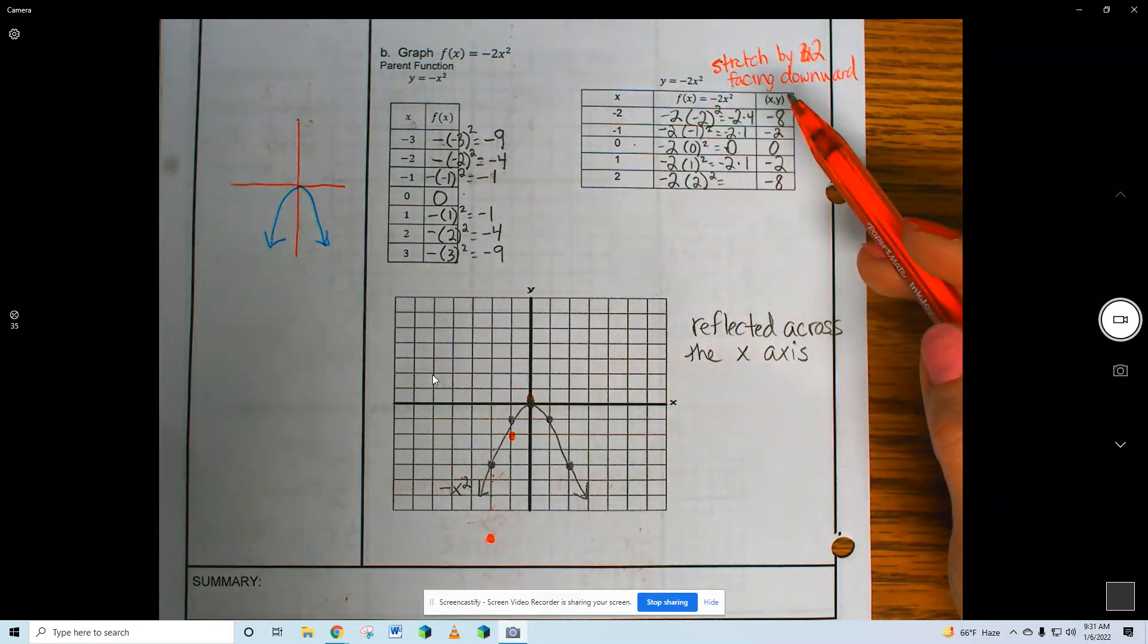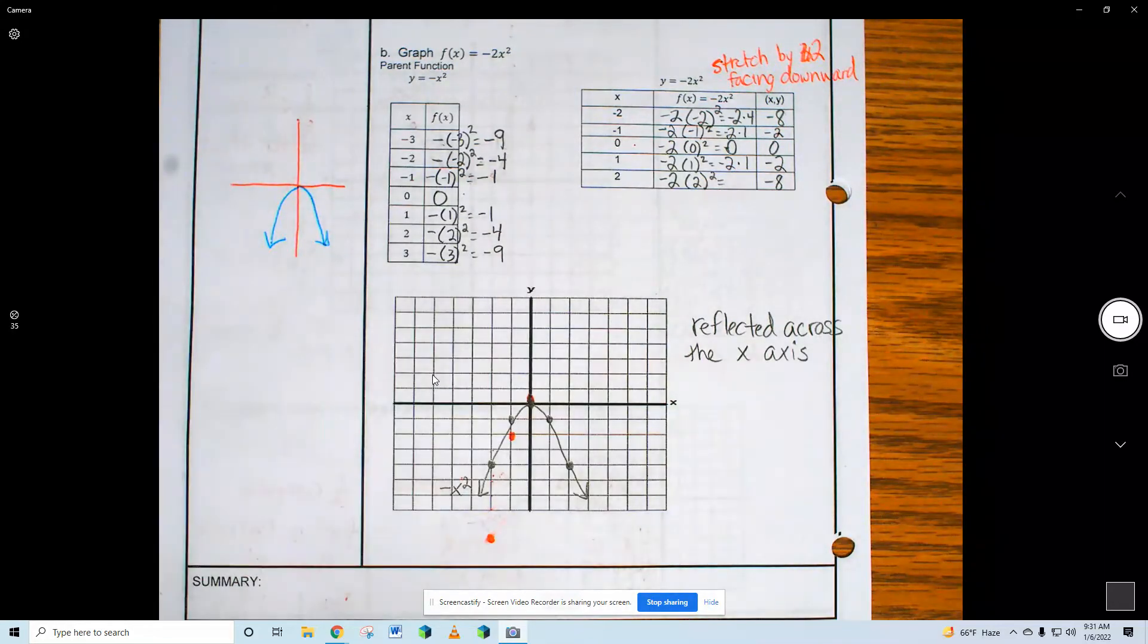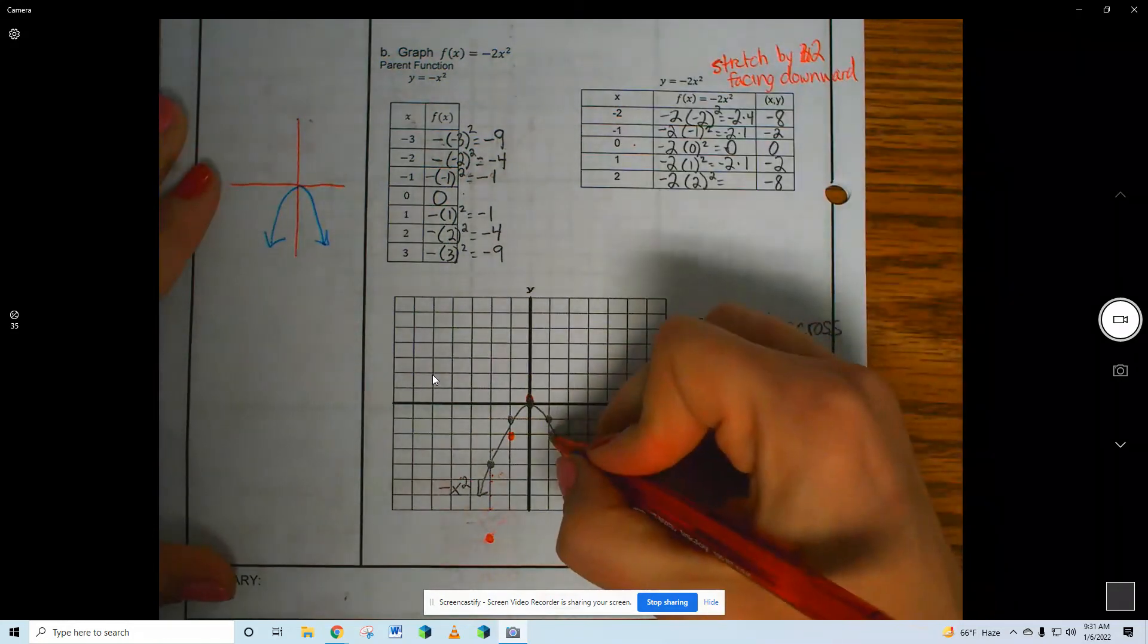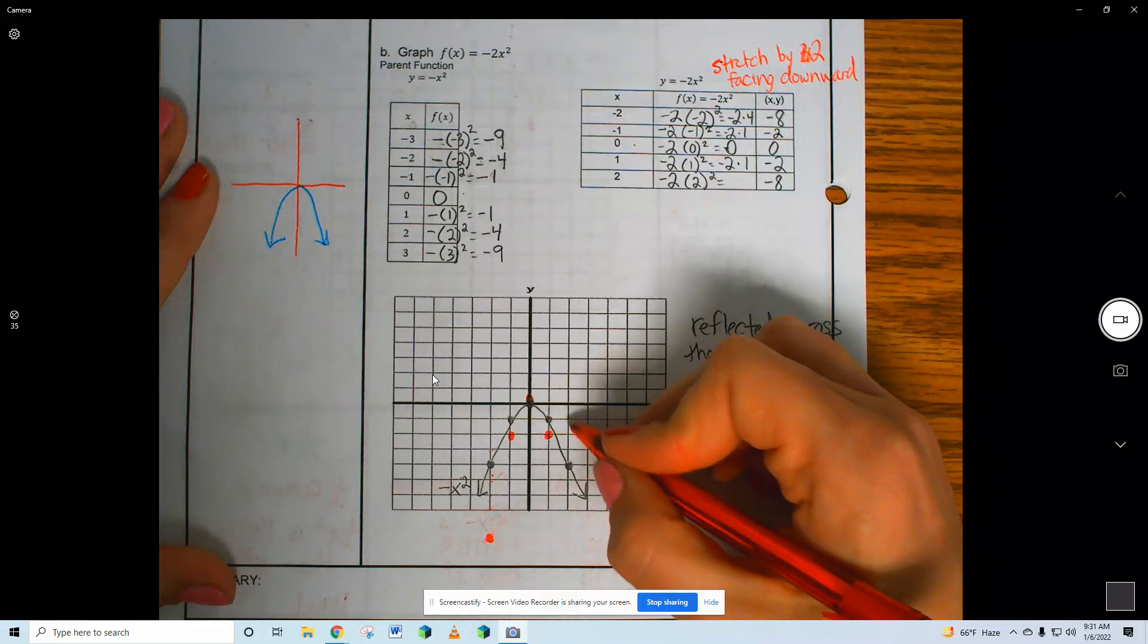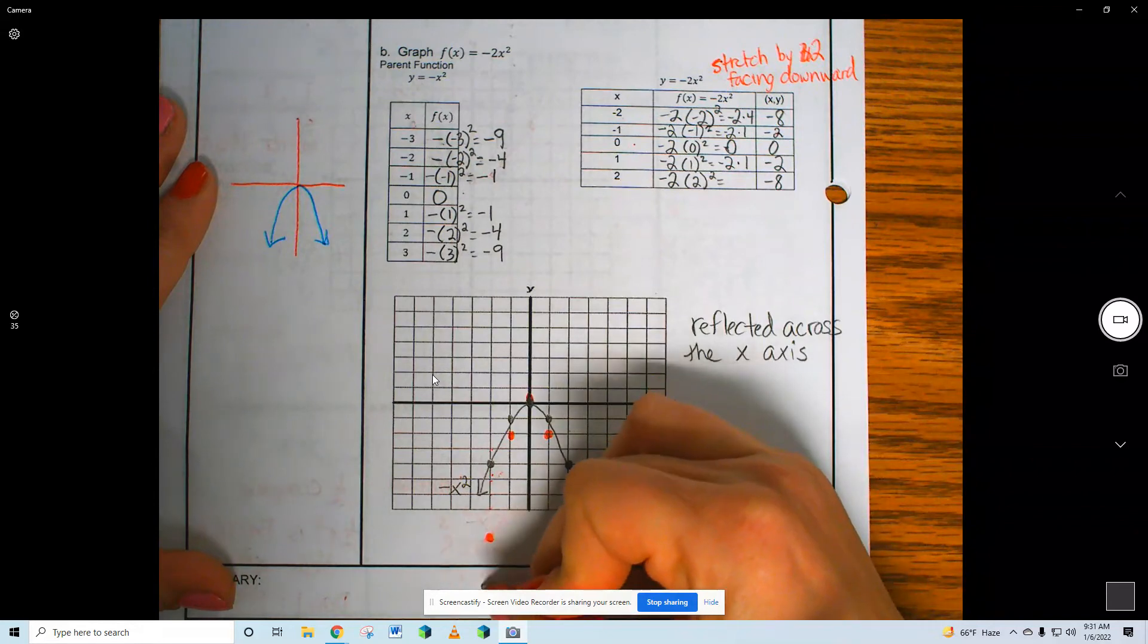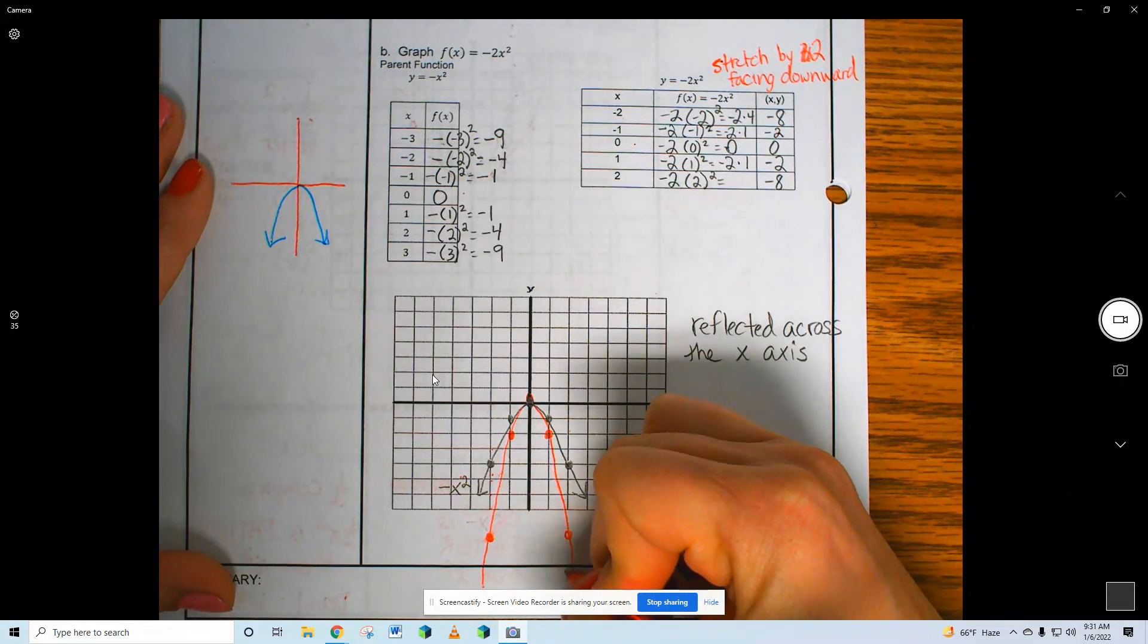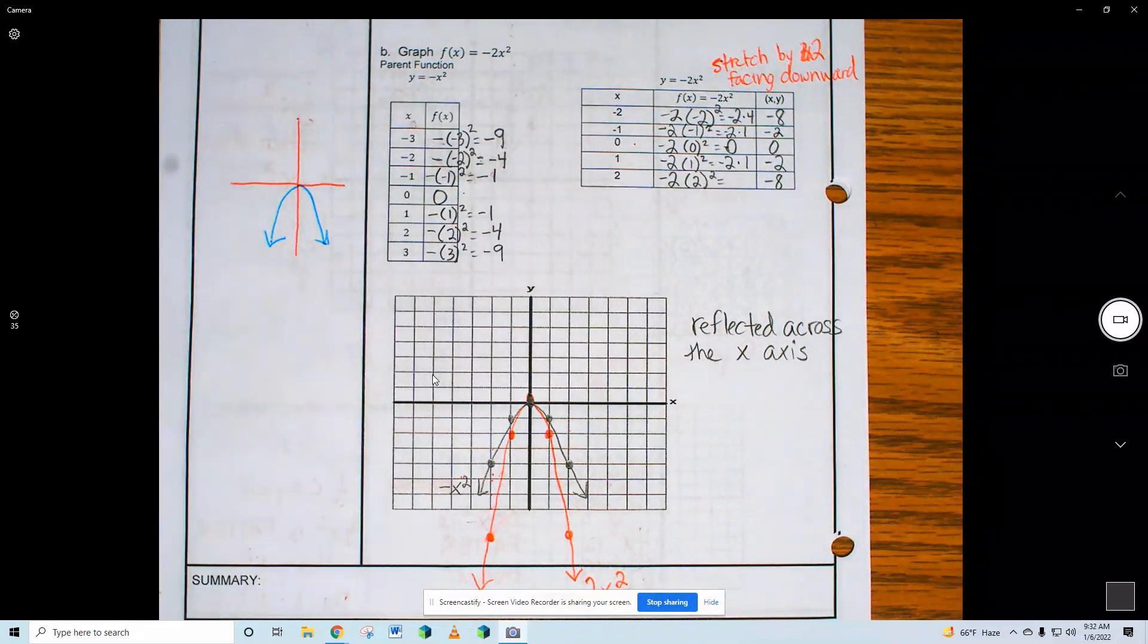Is this easy for you guys? What do you think? Easy or hard? Oh, good. 1 to the right, 2 down. 2 to the right, 8 down. Make it curvy. Do not make it a V shape. Make it curvy.